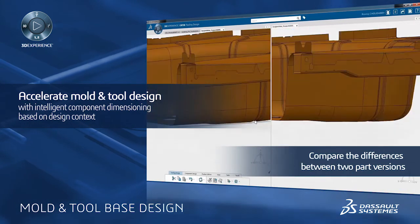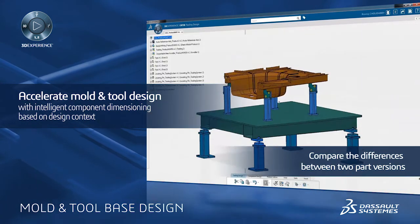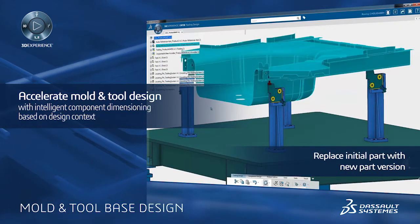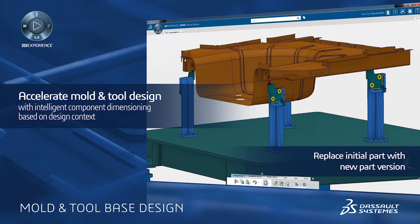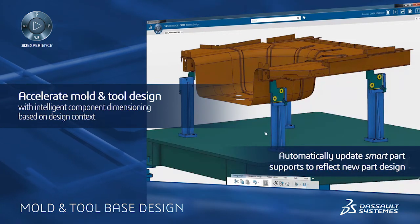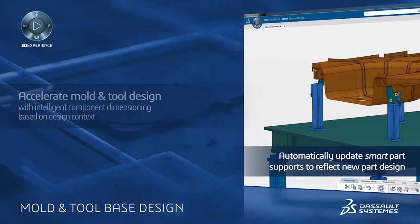These SMART components further accelerate the mold and tool design process by automatically adapting their dimensions to suit the context of the part being produced. In this example, we can see that when the profile of the stamp part is modified, the position and dimensions of the part supports can be automatically updated based on this new design context.